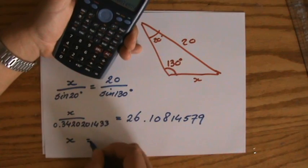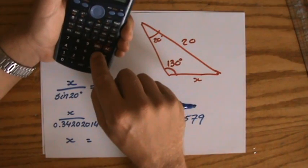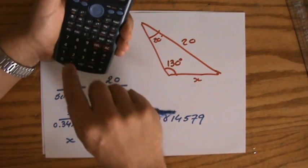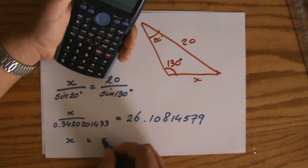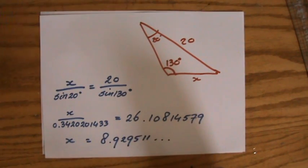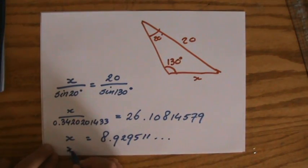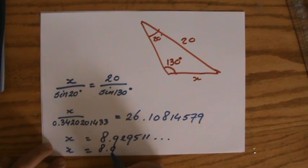Rearrange it to make x the subject, so I multiply both sides by these decimals, so by the sine of 20, I'm going to say, times the sine of 20, because I don't write down all those decimals, actually, and then x equals 8.92951, 1, 1, and a few more. So, three significant figures. It's going to be 1, 2, 3, 8.93.